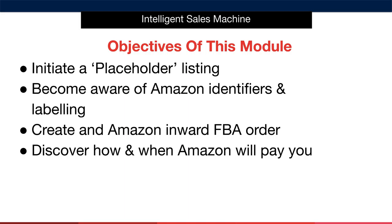Then we will move into the actual inward FBA order itself. When I say this phrase — inward FBA order — I'm talking about you informing Amazon of incoming stock which will be on its way in the future to one or many of their fulfilment centres. You simply cannot ship items to Amazon without informing them first. This goes not only for the shipment itself, but also what is contained in the shipment and how the shipment is made up.